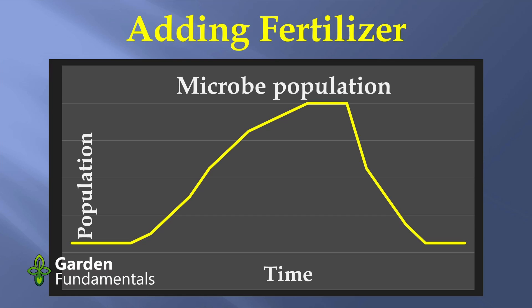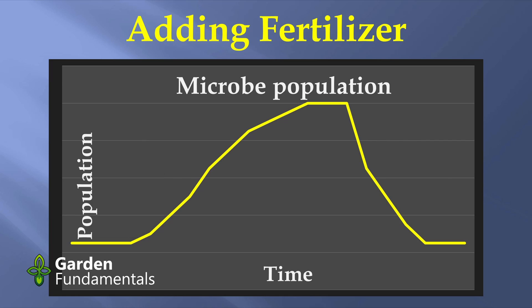When you go out and fertilize a farmer's field, you see a sudden boost in microbial population, and this chart shows you what it looks like. We're going along with a fairly steady amount of microbes, and then we add some fertilizer. Fertilizer is food for microbes, particularly the nitrogen. They prosper, start dividing, and you see a sudden spike in the number of microbes in the soil. Then they reach a point where most of the food is gone, so they start dying off. Initially, some of those dead microbes become food for the living microbes, but eventually all that food gets used up and the population comes back down. After this cycle of added food, the population is the same as it was before.